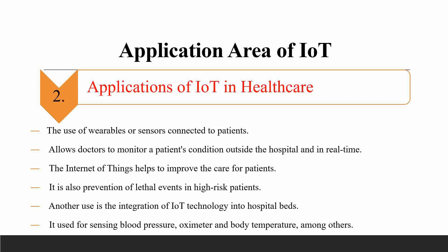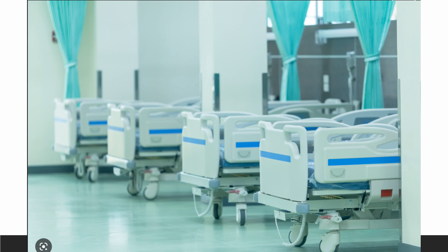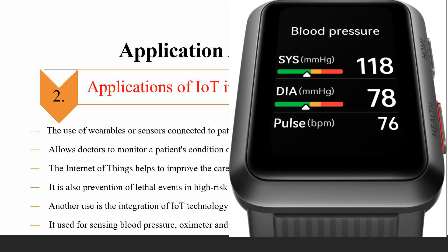The Internet of Things helps to improve the care of patients and helps prevent high-risk events. IoT can be integrated into hospitals to sense blood pressure, oximeters, and body temperature among other smartwatches, so we can measure blood pressure and body temperature.